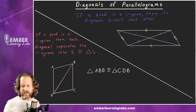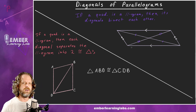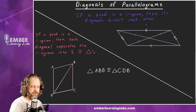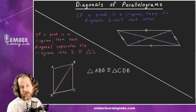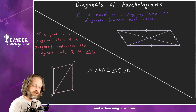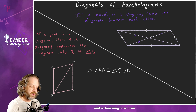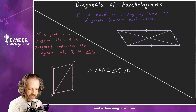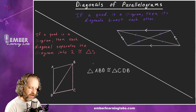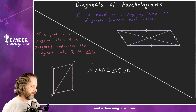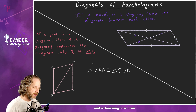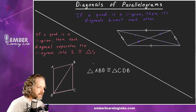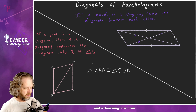The converse is also true: if a quadrilateral's diagonals bisect each other, then it's a parallelogram. I think we'll get to that in the next lesson, where we prove that a quadrilateral is a parallelogram using the converses of these theorems — that's foreshadowing.